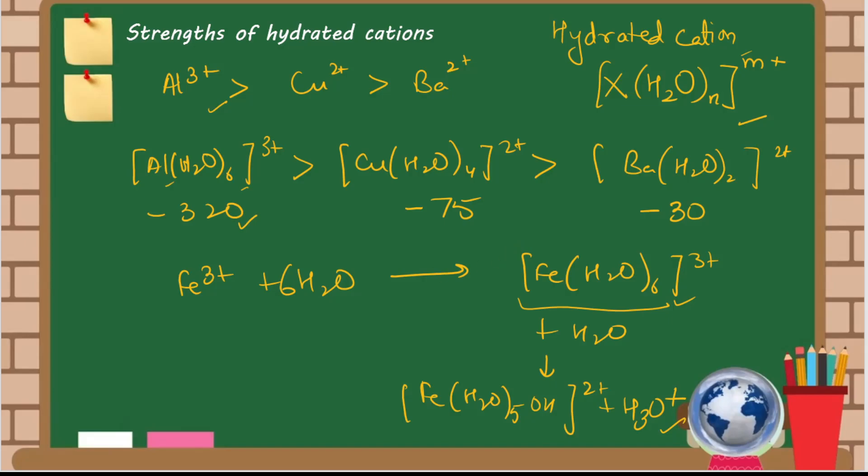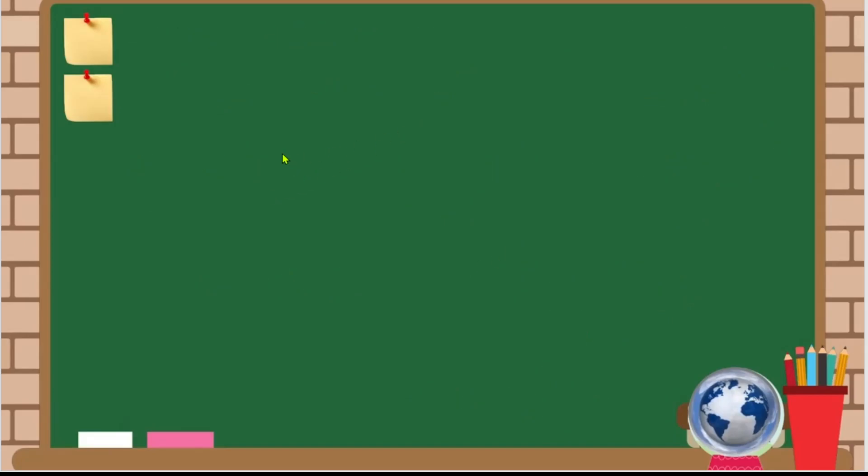So if we have a general reaction - if we have an ion [Fe(H₂O)₆]³⁺, I will write it as well [Fe(H₂O)₅(H₂O)]³⁺ - and here we will draw a water molecule. So if the charge is more, it will gain electrons faster. [Fe(H₂O)₆]³⁺ will gain electrons faster, so H₃O⁺ will release faster. So more is the charge on the central ion, more is the acidity. If the charge is more, if the size is smaller, then the acidity will increase.